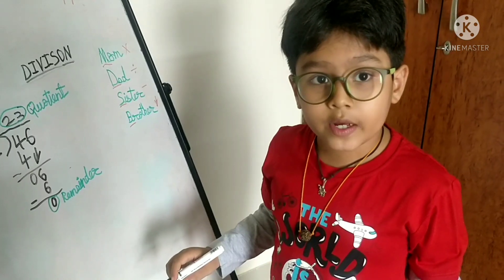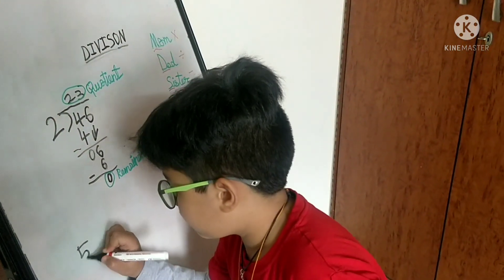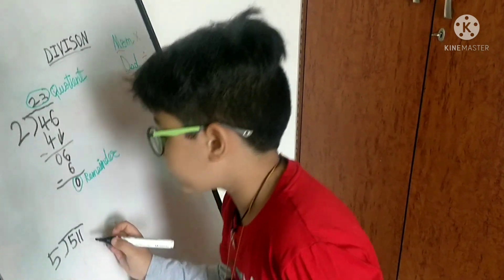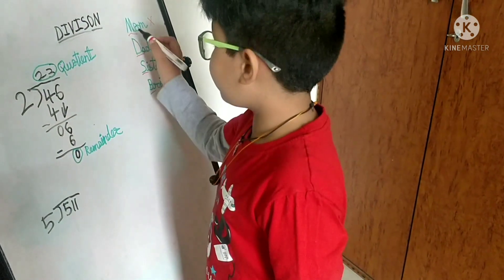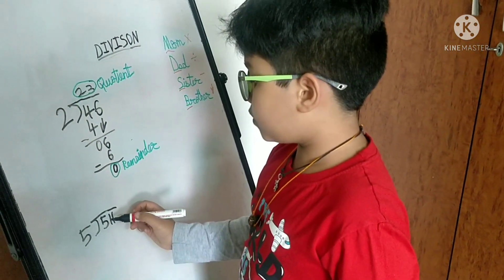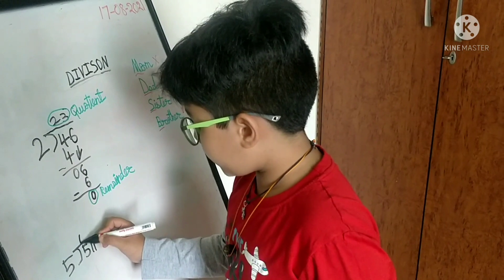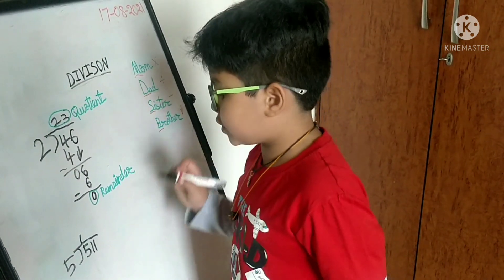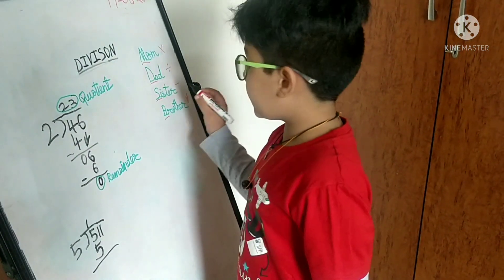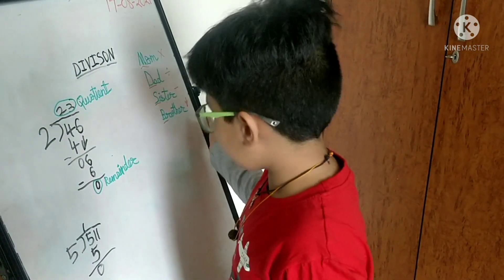Now let's take one more example with 3-digit numbers: 511 divided by 5. In 5's table, again the first step is multiplication. You have to think if 5 will come — in 5's table, 5 will come if you multiply with 1. So 5 ones are 5. Next step is division: 5 ones are 5. Next is subtraction: 5 minus 5 is equal to 0. Next step, bring it down.